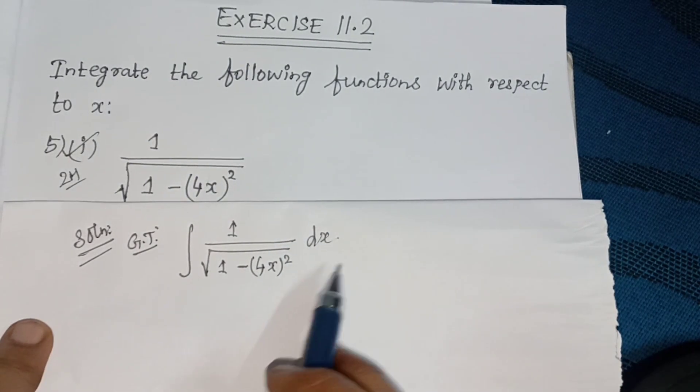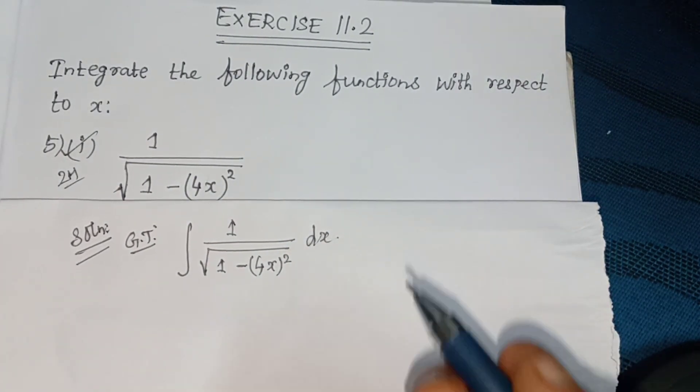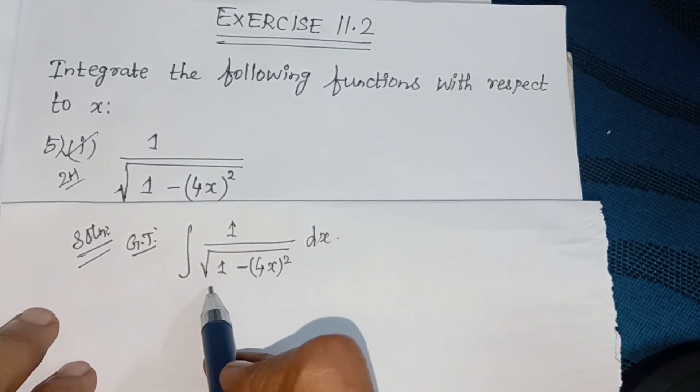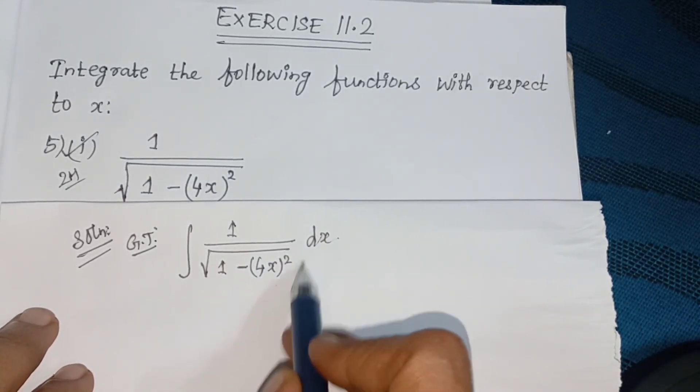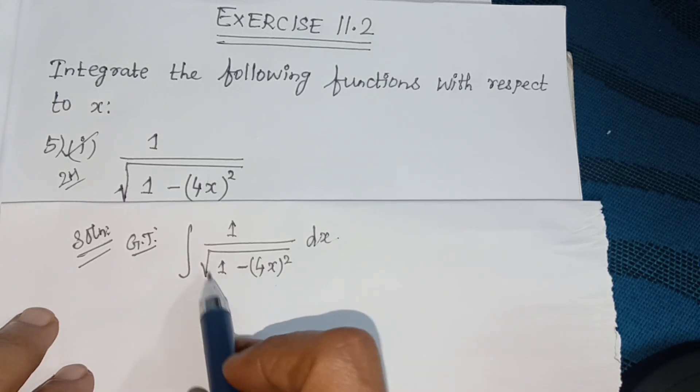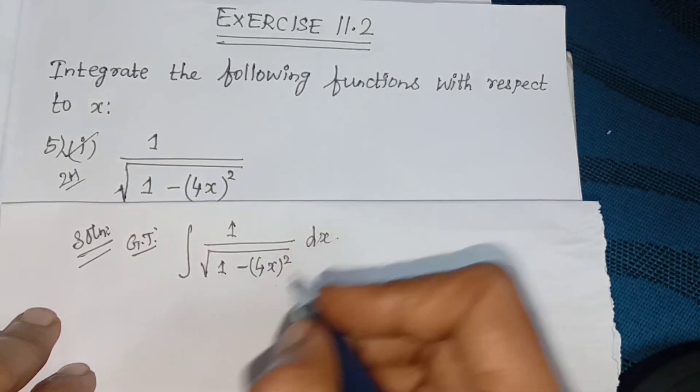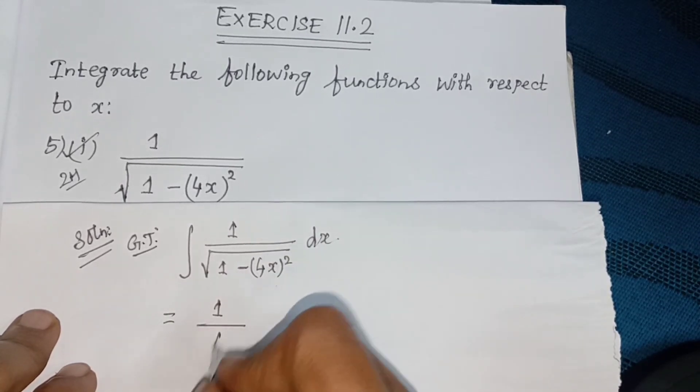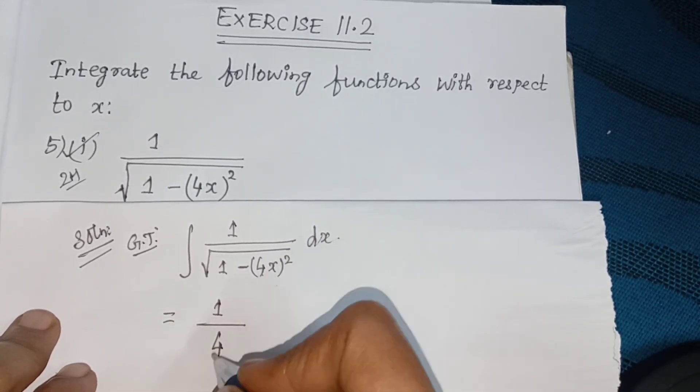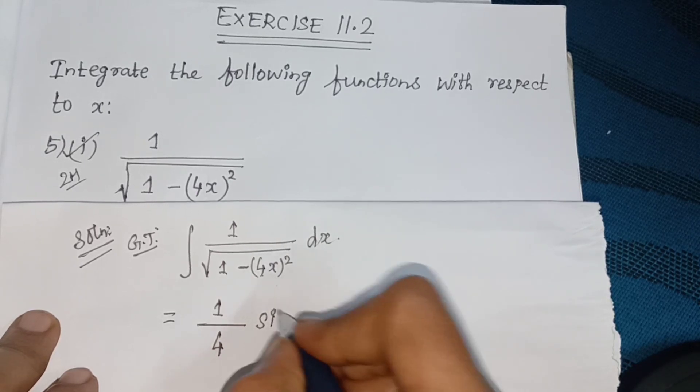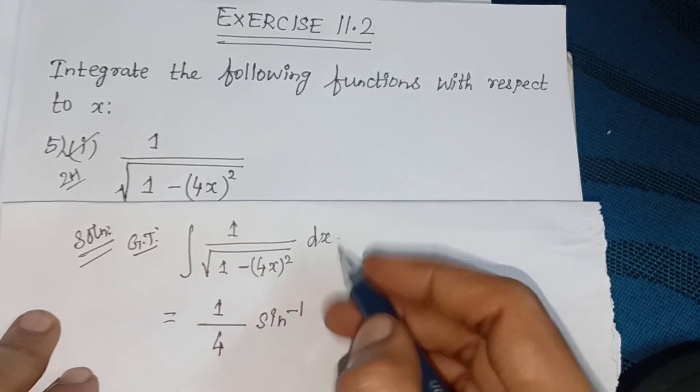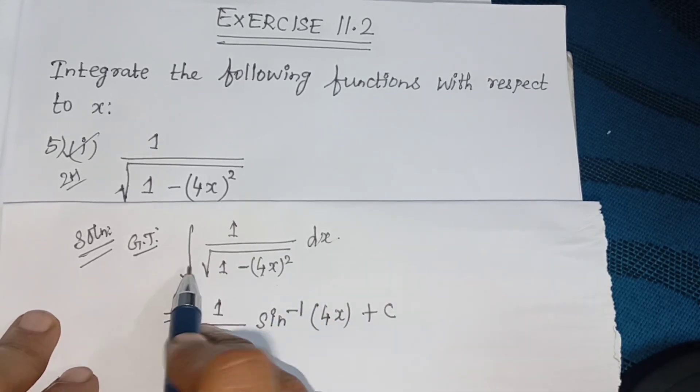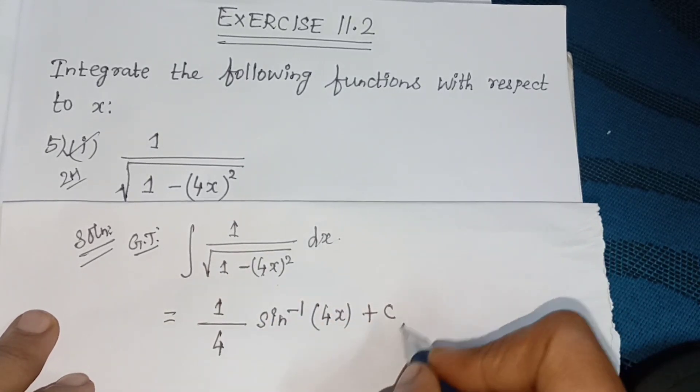So, integrate this function with respect to x. We get 1 divided by square root of 1 minus x square, this is sine inverse. So, 1 divided by 4, 4x whole square, 1 by 4 into sine inverse of 4x plus c. This is the final answer.